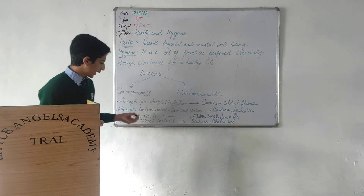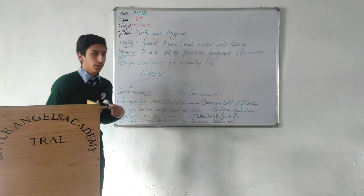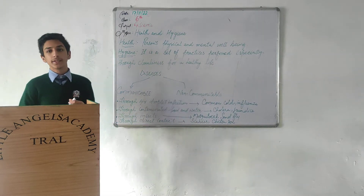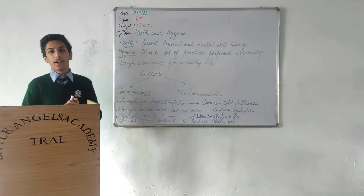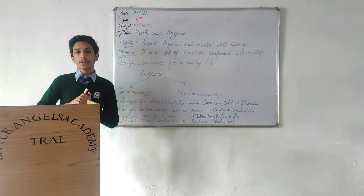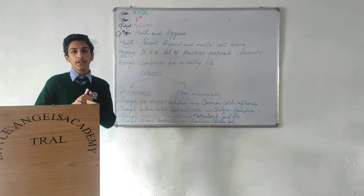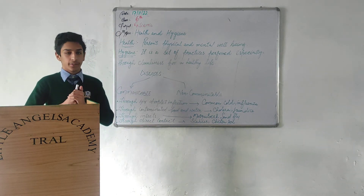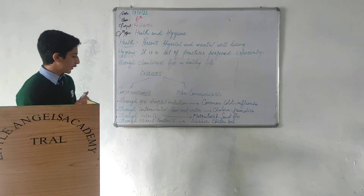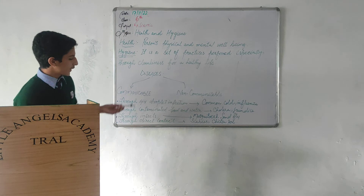Next comes through direct contact. When any person is infected and any healthy person comes into contact with him, he gets infected. Some examples are scabies.